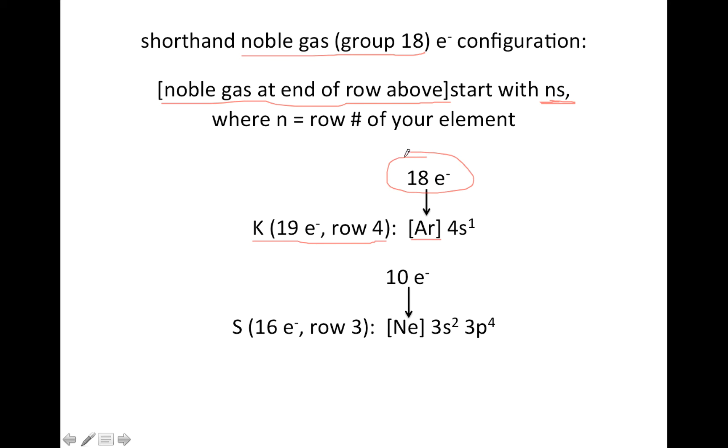And argon has 18 electrons, so that takes care of my first 18 electrons, so I actually only have to put one more electron after that, and the orbital you start with is whatever your row number is, so K is in row 4, so I'm going to start with 4s, because we're always going to start with the ns, where n is the row number of your element.